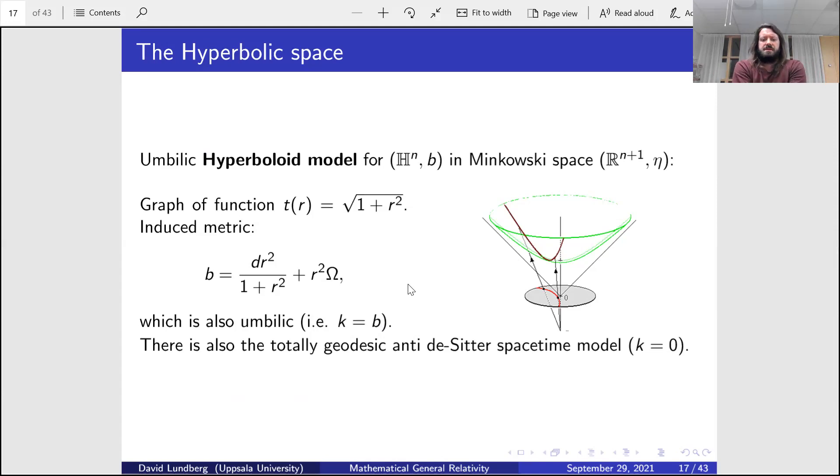We could also do the anti-de Sitter spacetime model, where you restrict at t equals zero time slice, and that would be totally geodesic, so k is zero. In this talk we will focus mainly on the hyperboloidal model, so this is the umbilic case.